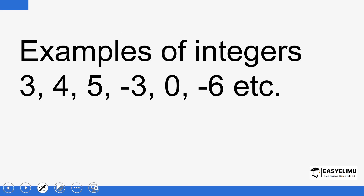We have examples of integers such as four, three, five, negative numbers — so long as it's a whole number, whether negative or positive, we call them integers, and zero is part of that range. Zero is an integer, negative three is an integer, negative six is an integer. If you have 2.4, this is not an integer because it's not a whole number. For a number to be called an integer, it has to be a whole number, whether negative or positive, and zero is included.